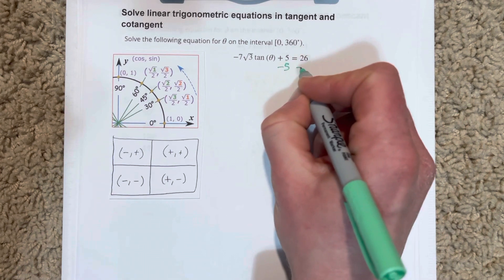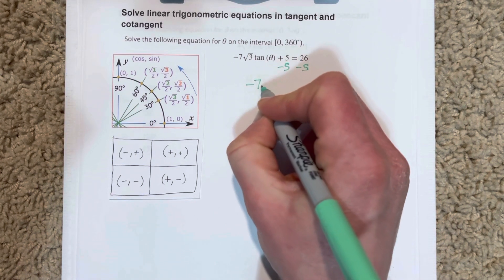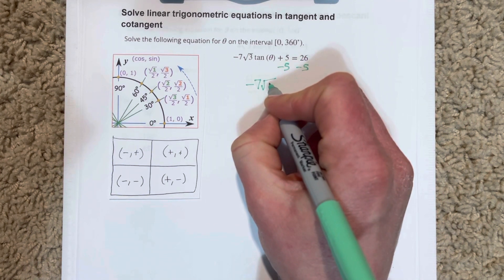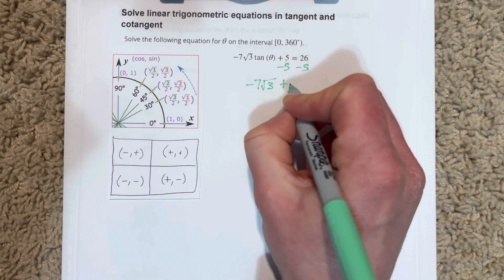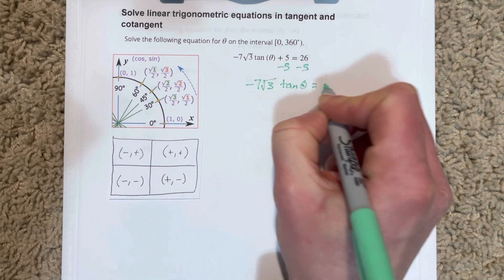We're going to subtract 5 on each side and get negative 7 root 3 tan theta equals 21.